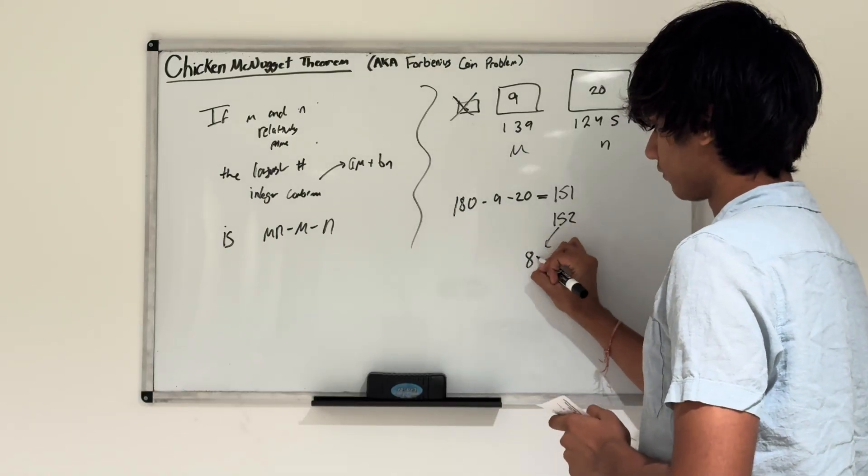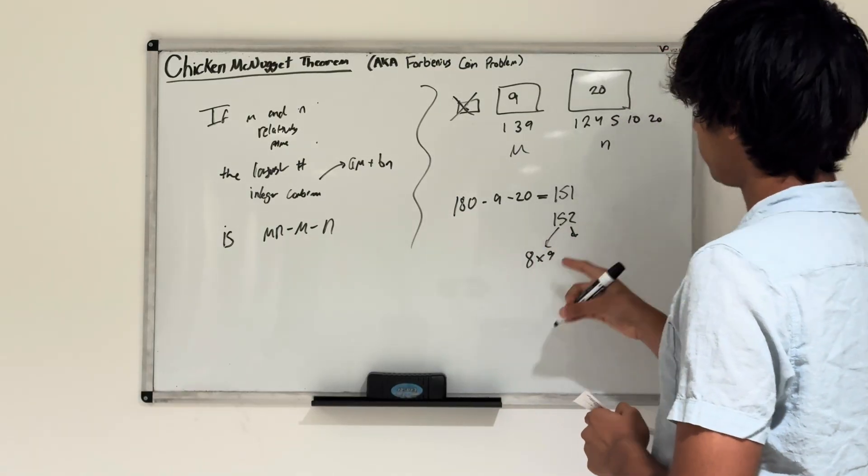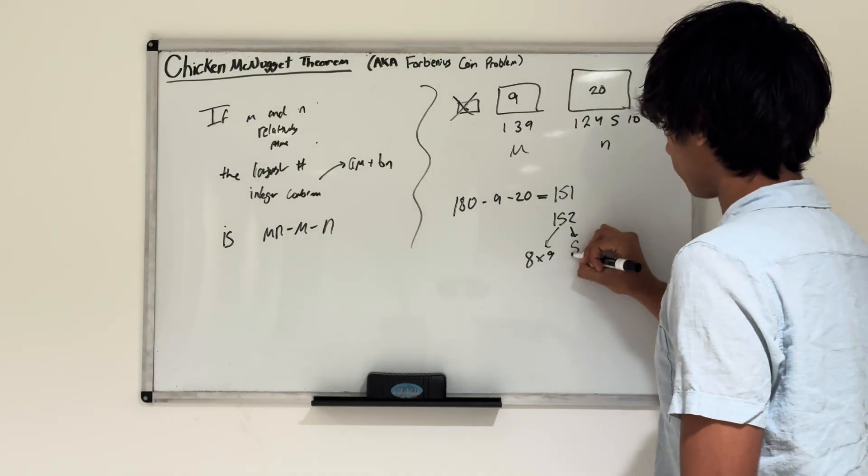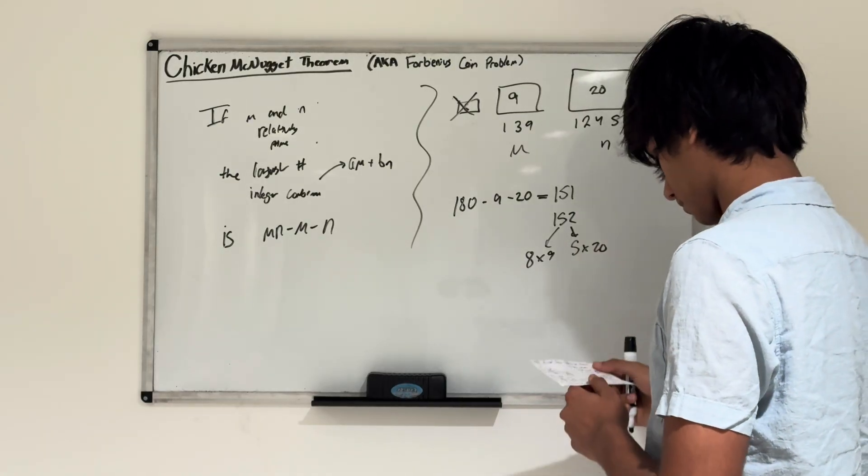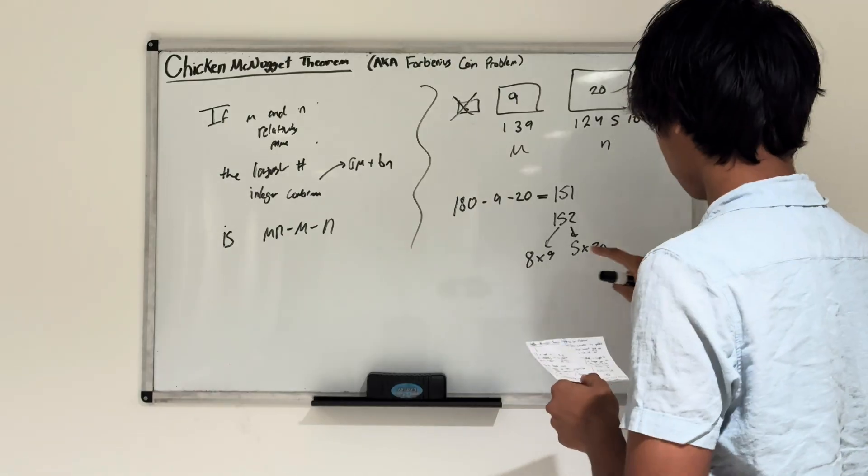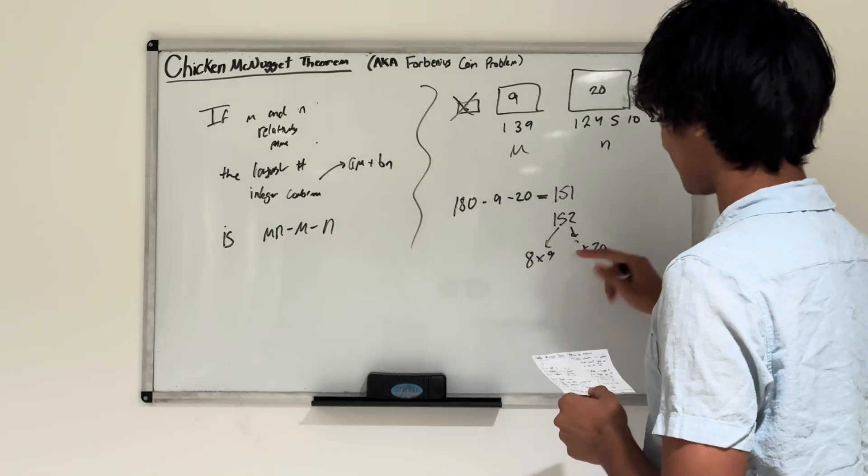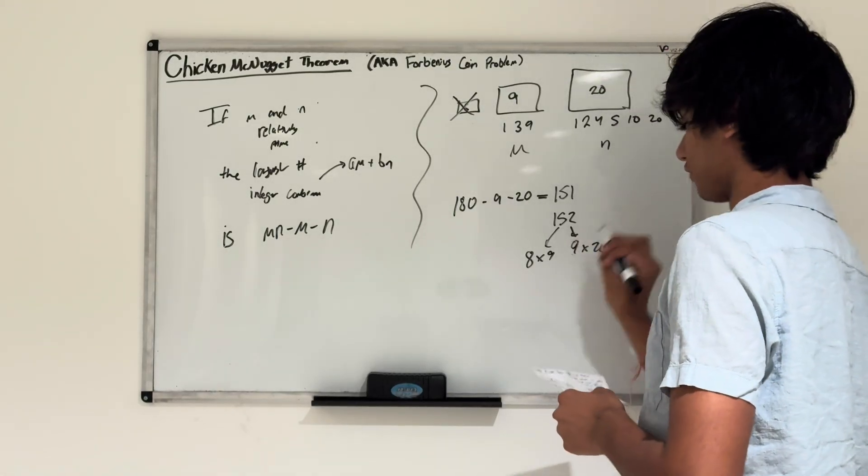For 152, we could do 8 boxes of 9, which is 72. Then we could do 4 boxes of 20, which is 80. 72 plus 80 equals 152.